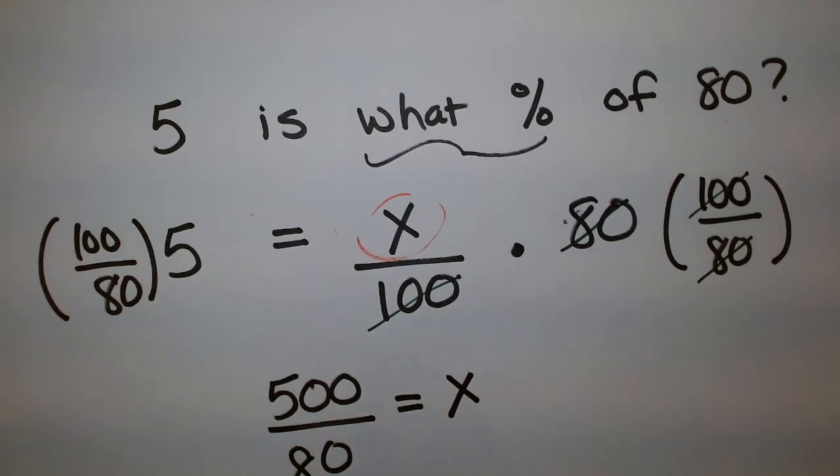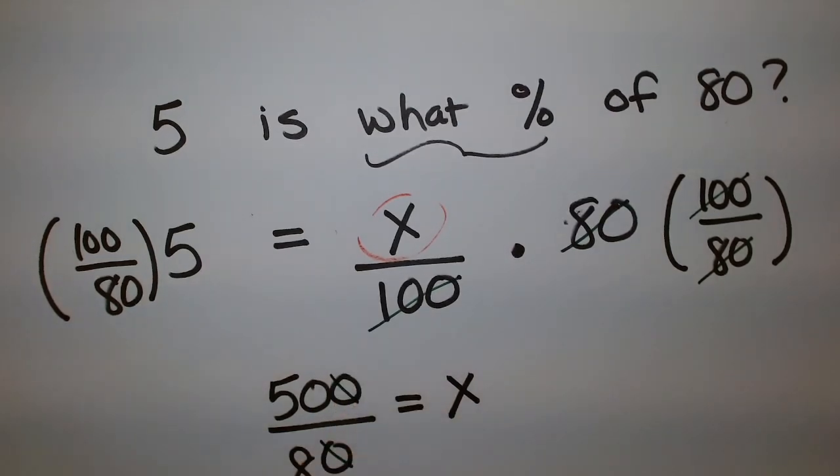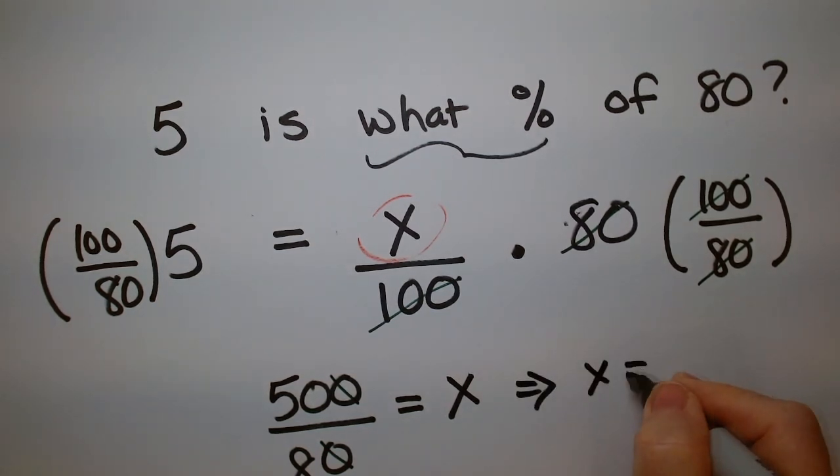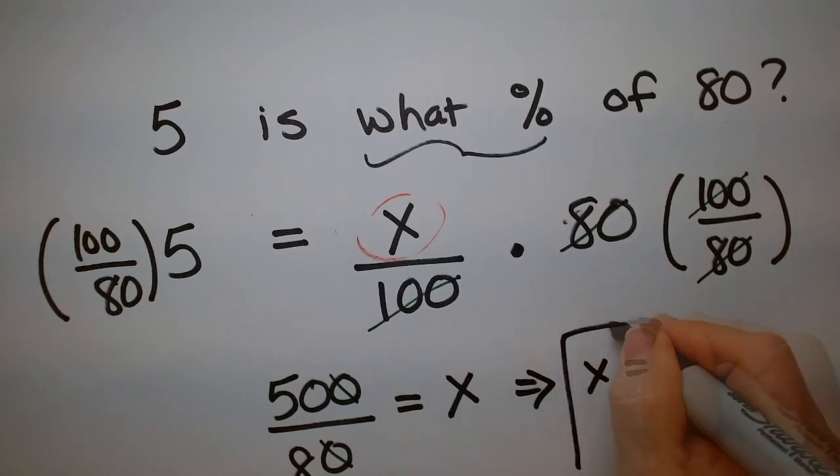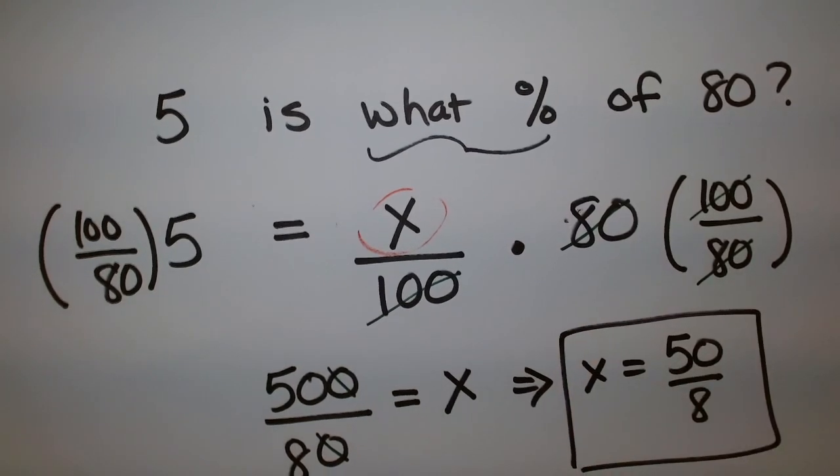So 5 times 100 is 500 divided by 80 equals X. And then one of the zeros cancels out. So I have 50. So X is going to be 50 divided by 8.